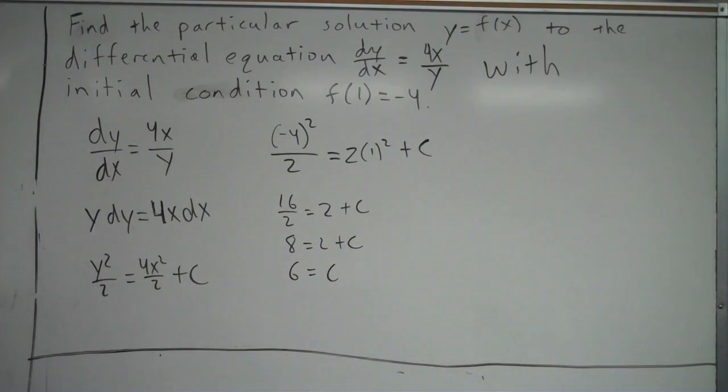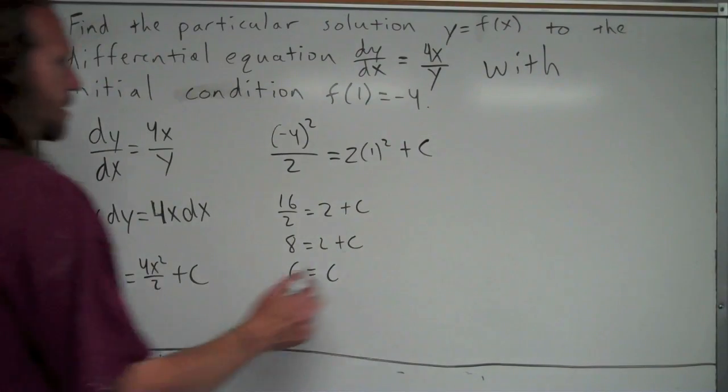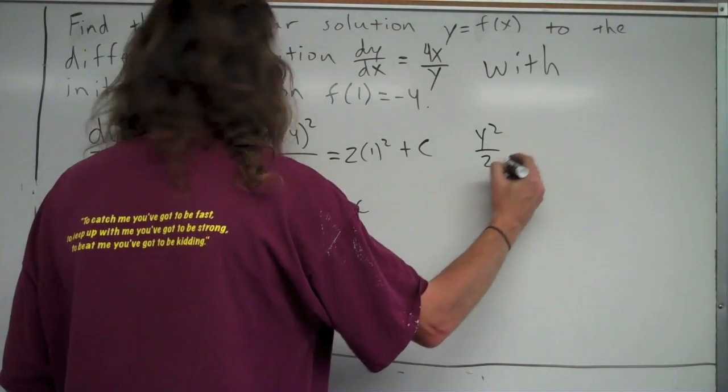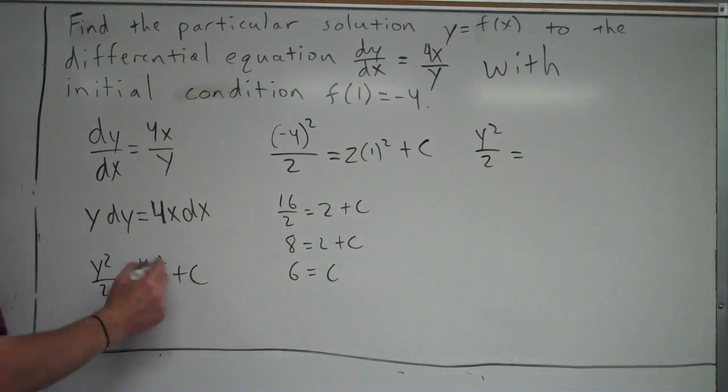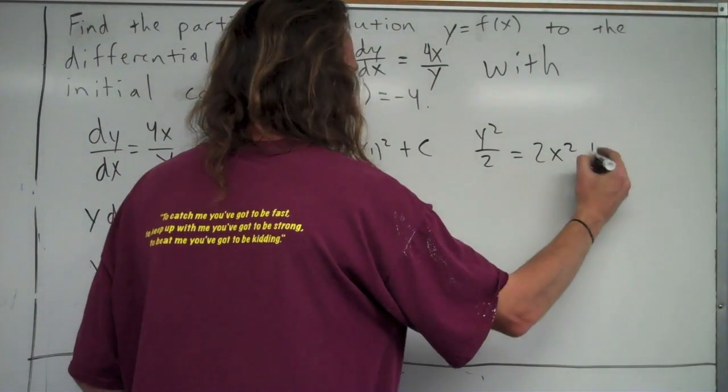I'm going to take 6 and plug that back in for c into this equation, and get y squared over 2 is equal to, instead of writing it as 4 over 2x squared, I'll just write 2x squared, and then plus 6.